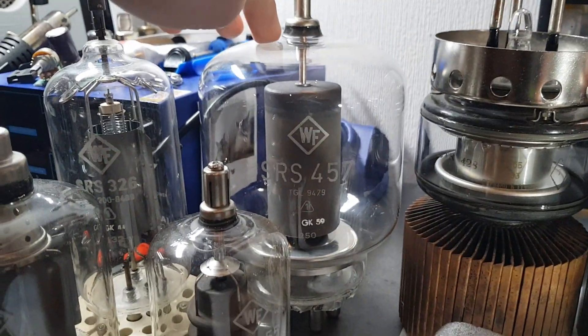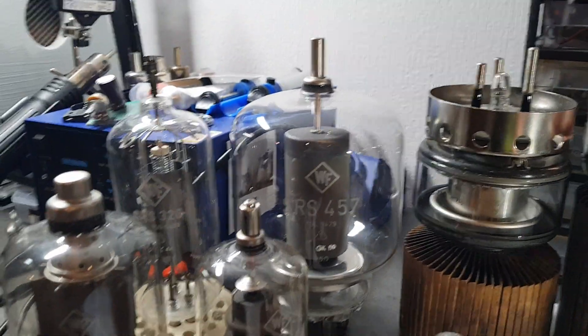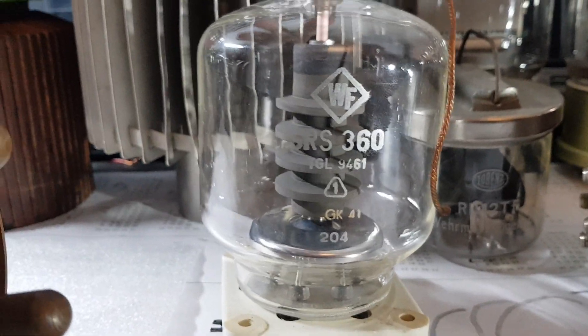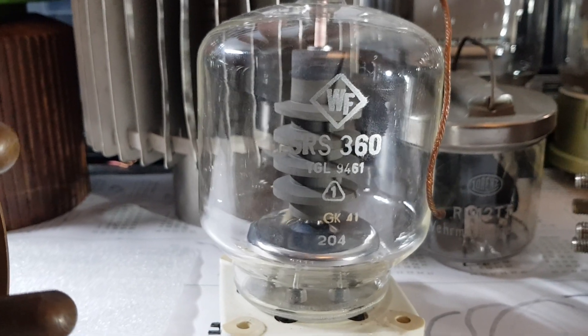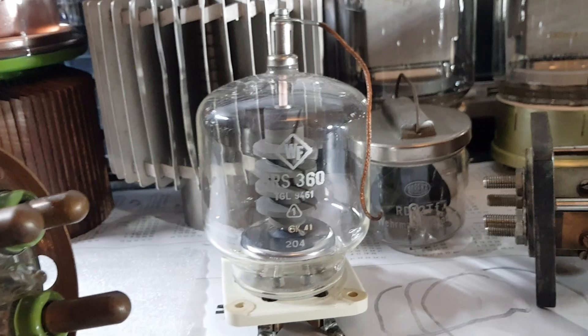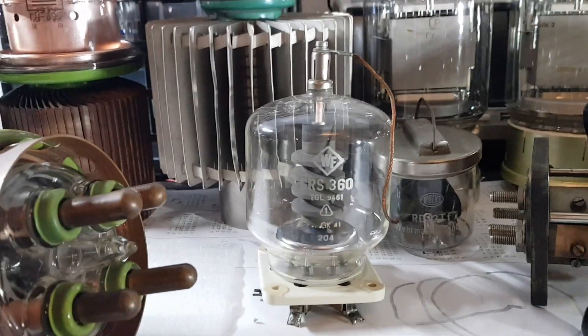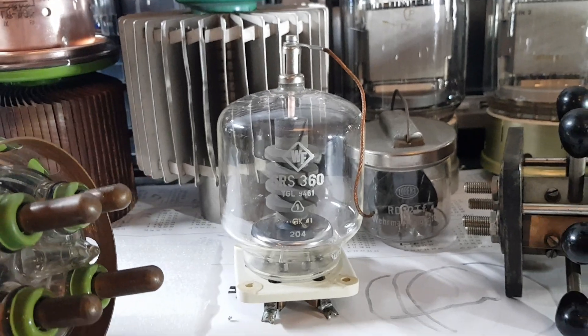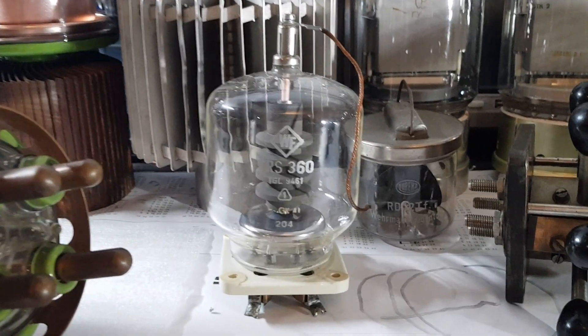This is the SRS 457, but I talked about that in part one. And we have the SRS 360. It's a very nice tube. I made an HF VTTC with that. There's a video about it on my channel. I have two of these, so one is built into my coil right now.